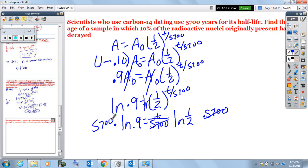And then we're going to see in the end that we have 5,700 times the natural log of 0.9 equals t times the natural log of one-half.